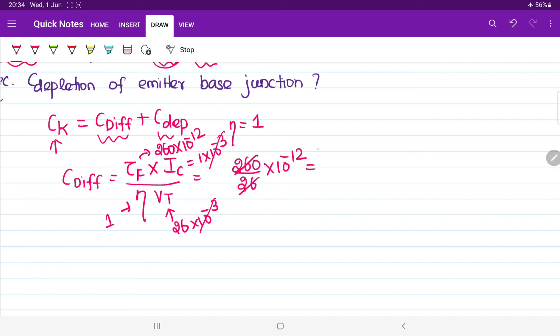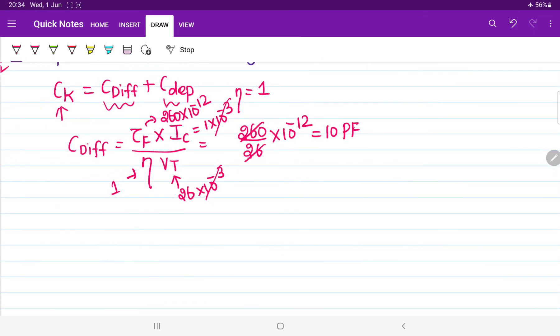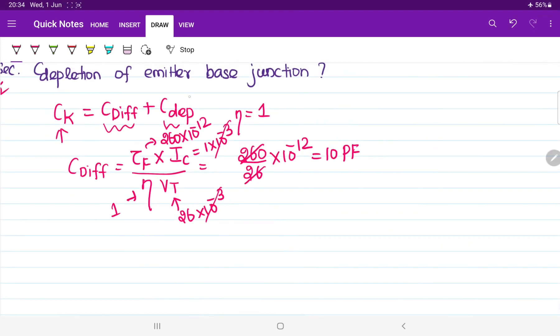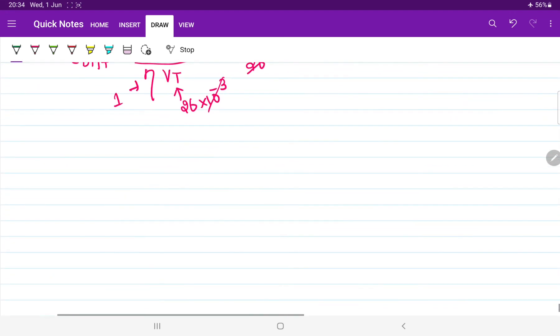Once again, it will be considered as picofarad. So, we found the value of diffusion capacitance. Now, from here, how to calculate the value of depletion capacitance? It is very easy. In order to know the value of depletion capacitance from this derivation, let us write like this. Depletion capacitance can be written as overall capacitance minus diffusion capacitance.